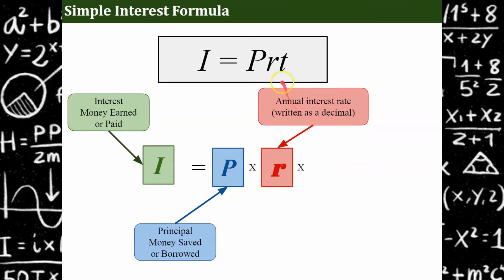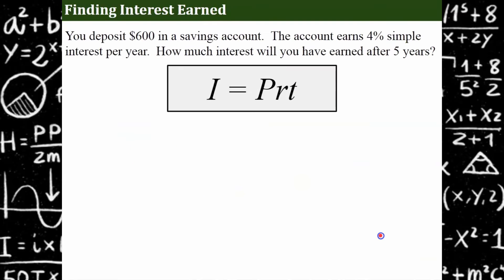And then the fourth component that we have to our simple interest formula is time. And we always put time into our formula in years. So for example, if we said that it's for six months, then we would put one half in there, because six months is half of a year.